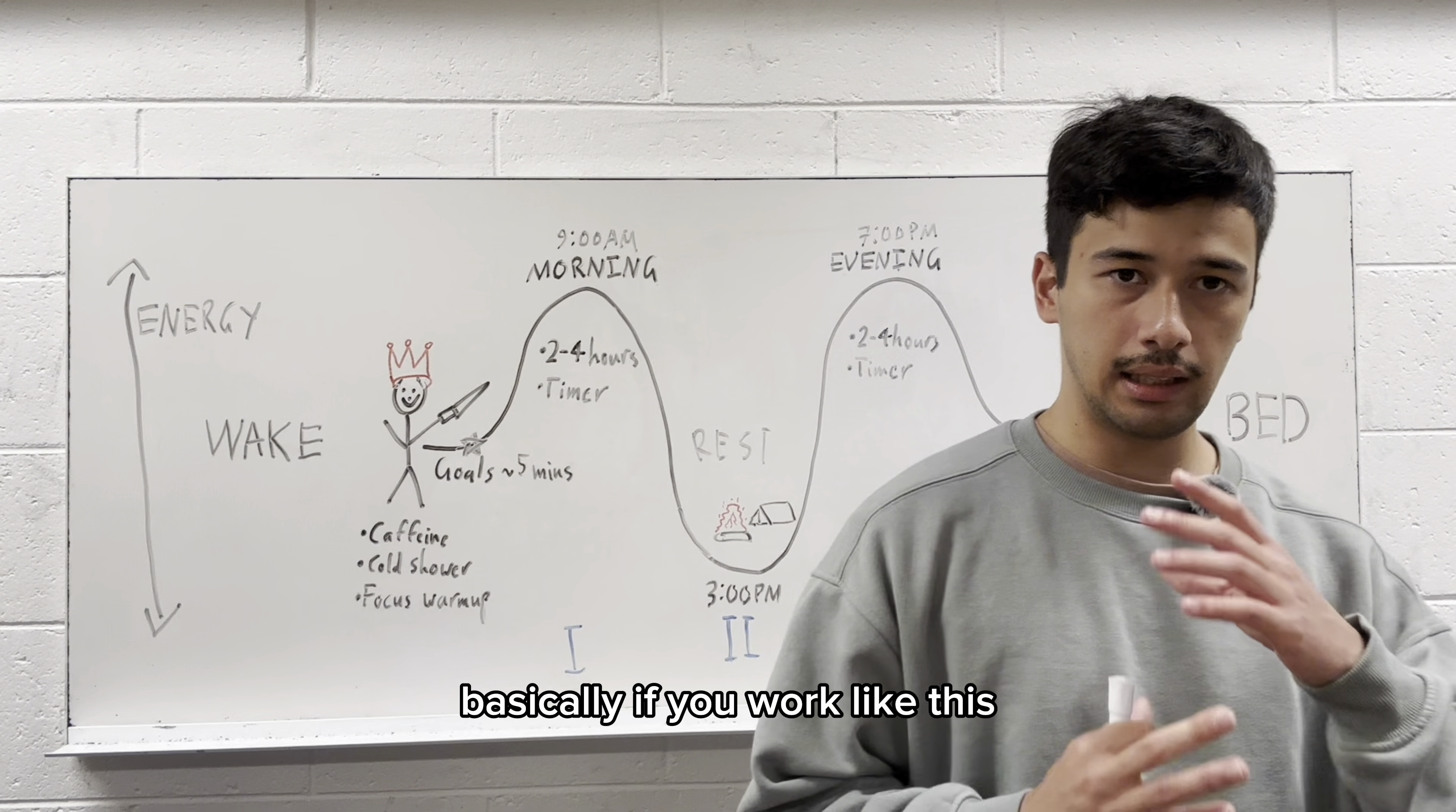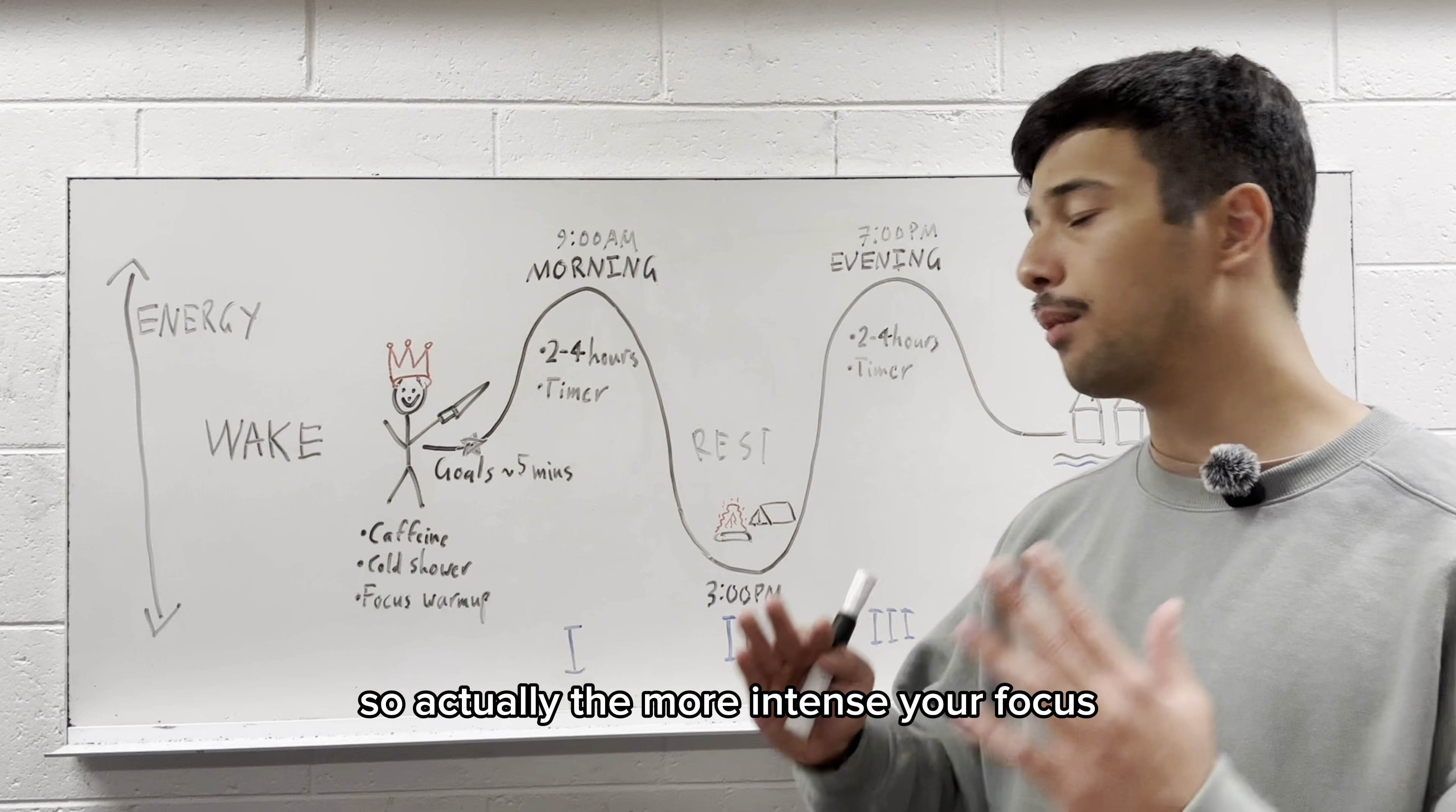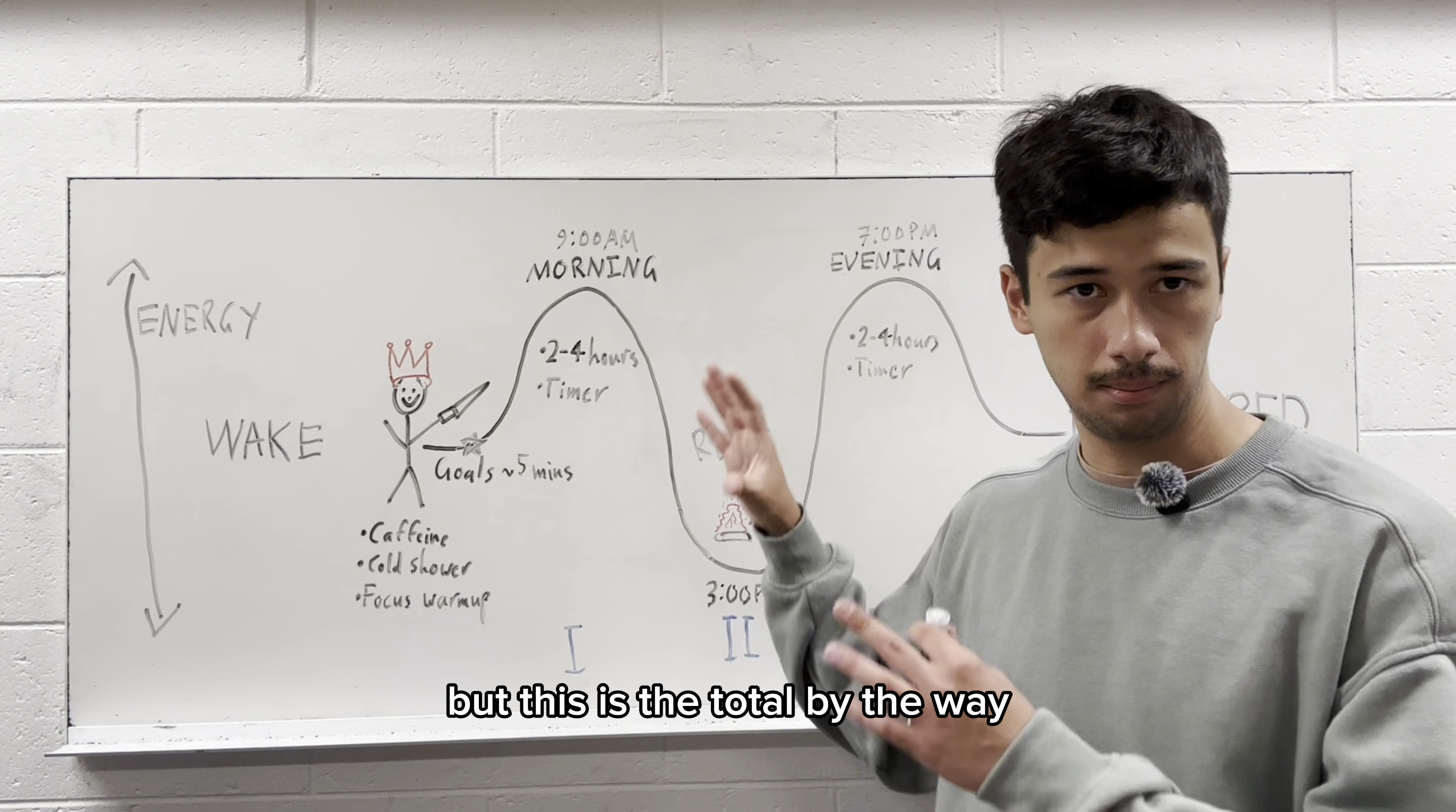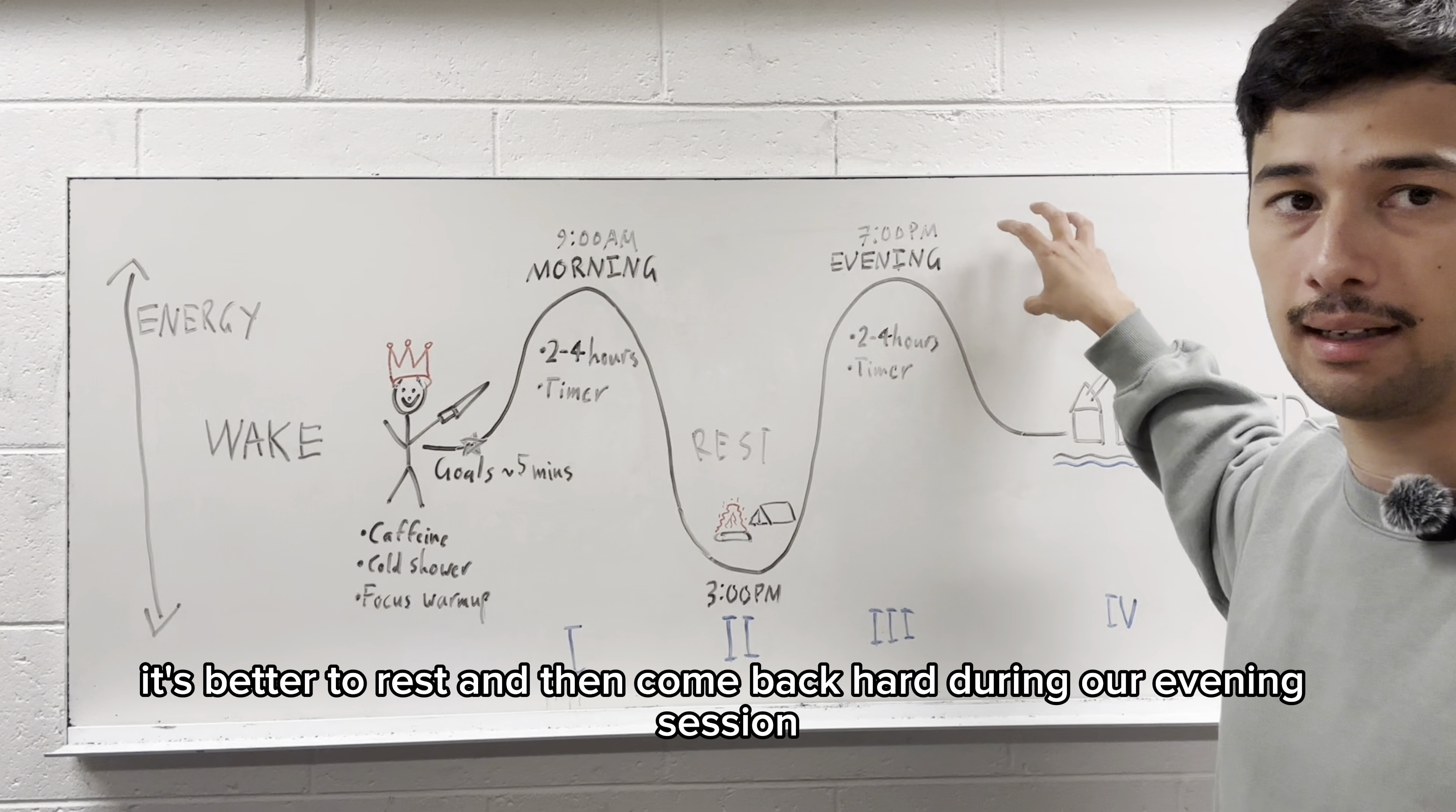Now I'll tell you why exactly two to four hours here. Basically, if you work like this, if you've read the book Deep Work by Cal Newport, if you've studied the science of focus, you know that focus is like a muscle. If you focus very, very intensely, then you need to rest. You can't focus for 12 hours. If you can study for 12 hours, that means you're not focused very intensely. So actually, the more intense your focus, the less amount of time you want to study. So if your focus is really, really, really intense, two hours is pretty much the maximum you're going to be able to do. If your focus is more trash, then you're going to go more towards the four hour mark. But this is the total, by the way. But after about four hours, your focus system is going to be so depleted that you literally need to rest. It's like an athlete sprinting. If you've sprinted so much, you need to rest. If you keep trying to sprint, it's going to be so inefficient that you're just going to waste all this time. It's better to rest and then come back hard during our evening session.